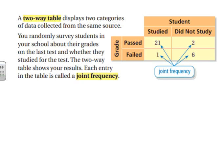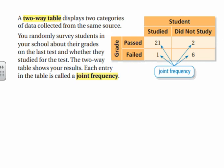As an example, it looks like a grid or table. This one shows you surveying students on whether or not they passed the test and whether or not they studied. Each individual entry on your table is going to be called a joint frequency. There will be quite a few vocabulary words in today's lesson, so pay attention to the highlighted words. From each joint frequency you can see whether a student studied and whether they passed.